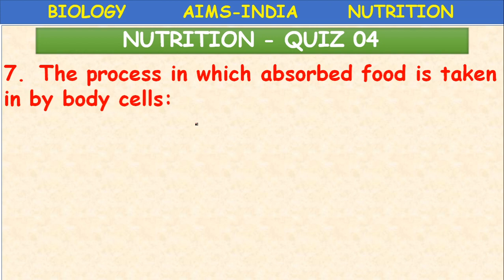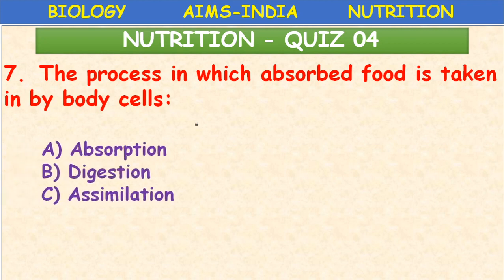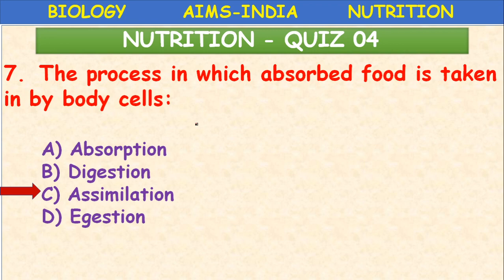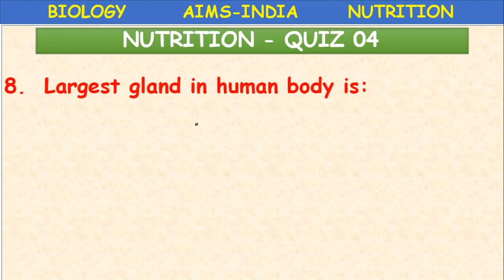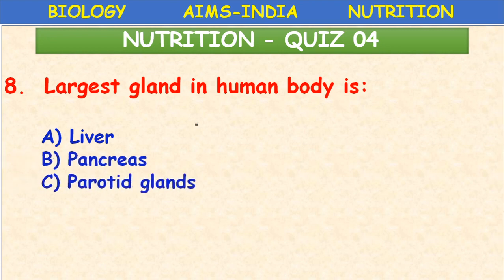The process in which absorbed food is taken in by body cells is called assimilation — option C. This is the fourth step of nutrition. The largest gland in the human body is the liver — option A is correct.